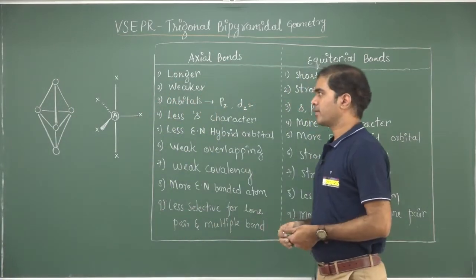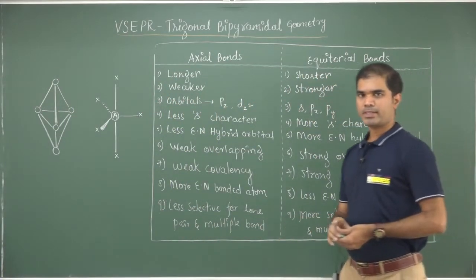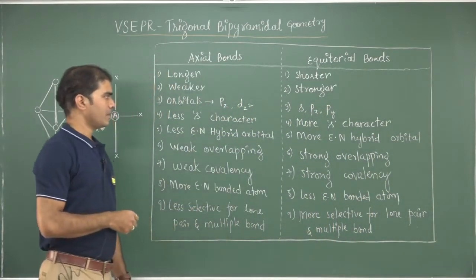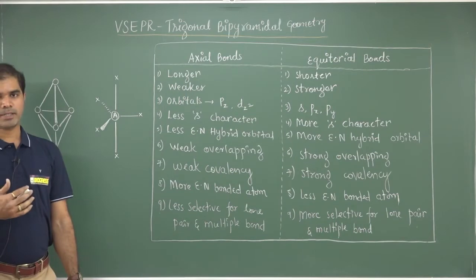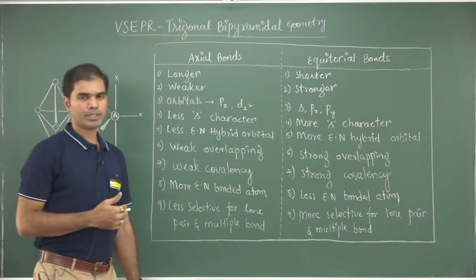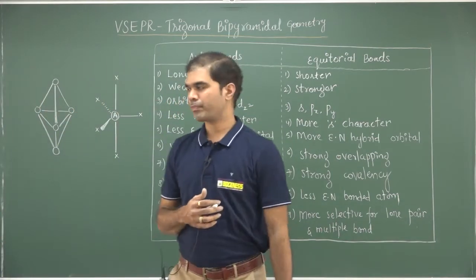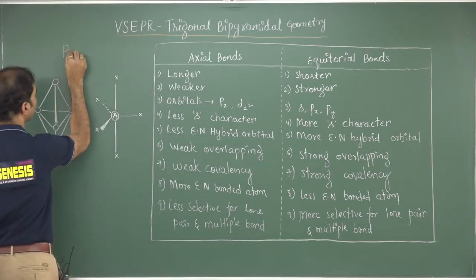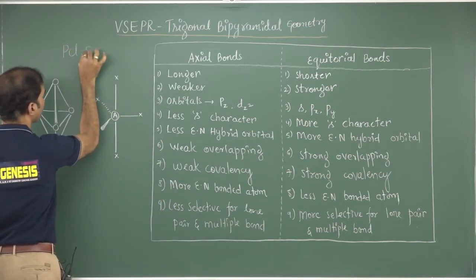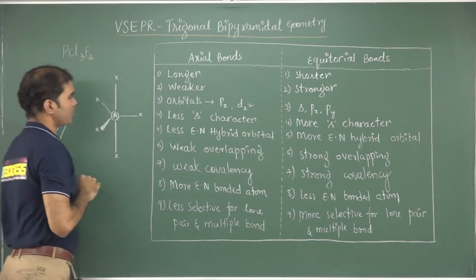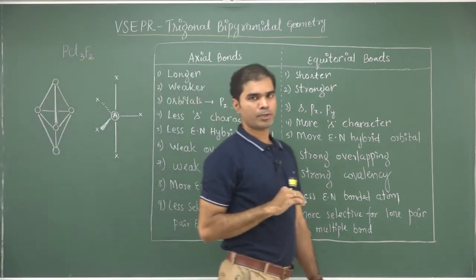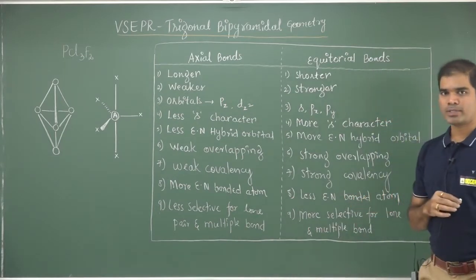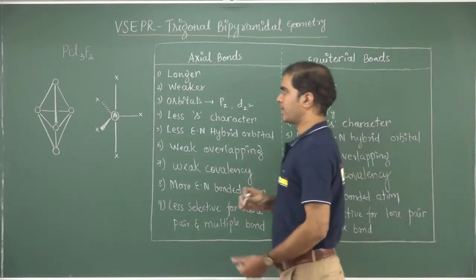Hello everyone. Let us discuss a geometry which confuses many students when asked whether bonded atoms take up equatorial or axial positions. Let me give you an example — PCl₃F₂. Where do the fluorines go, or where do the chlorines go? Is there any set guideline for it?